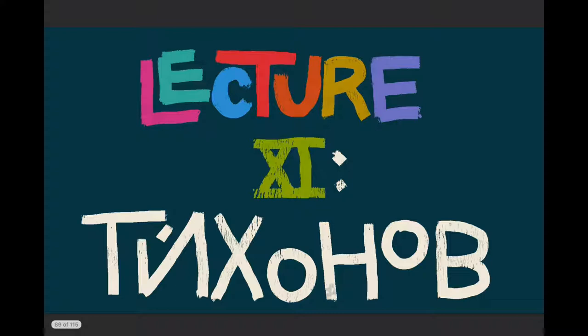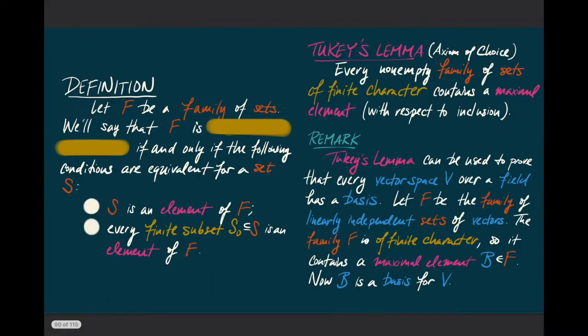This is called the Tychonoff theorem. Whereas the statement about finite products was relatively easy to prove, the Tychonoff theorem is hard to prove. In particular, it requires the use of the axiom of choice. The particular form of the axiom of choice we're going to employ is called Tukey's Lemma — a lemma that's actually equivalent to the axiom of choice, but places it in a form that's very useful for proving Tychonoff's theorem.